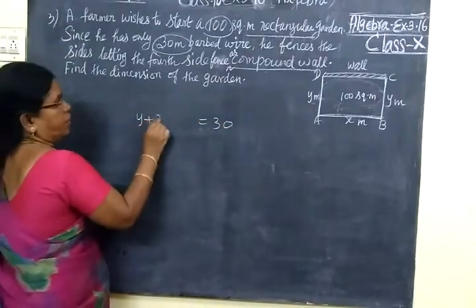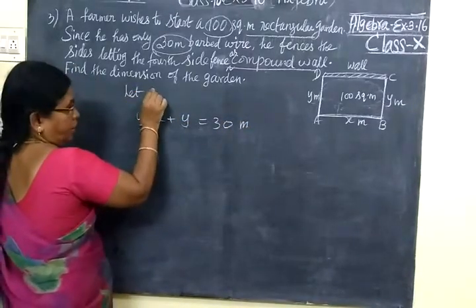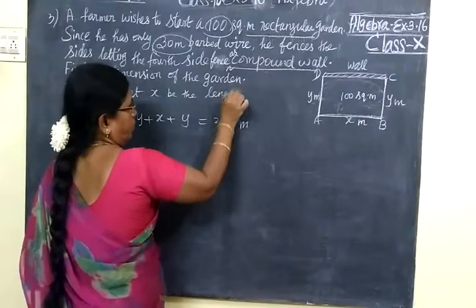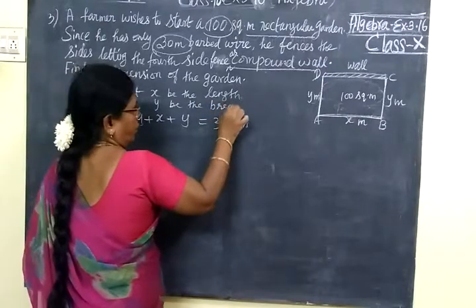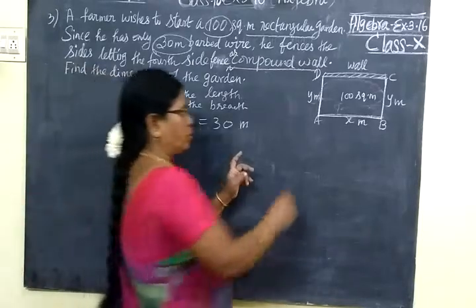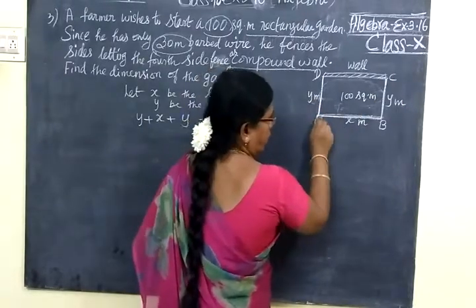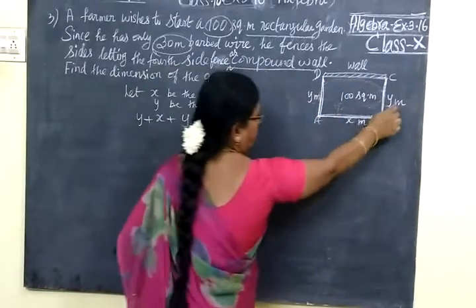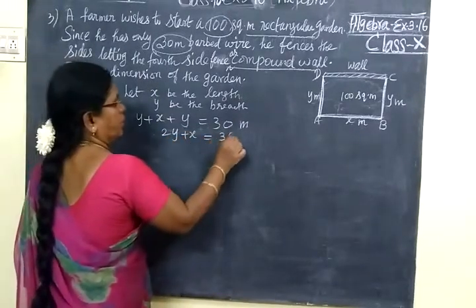That is y plus x plus y equal to 30 meter. Here we will let x be the length, x meter be the length and y be the breadth of the rectangular field. So given y plus x plus y equal to 30 meter. So using the wire, he is making the fencing like this. Length is x, breadth is y. Again this breadth is y.